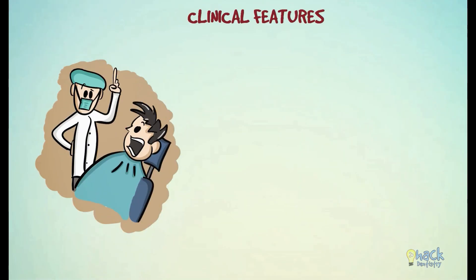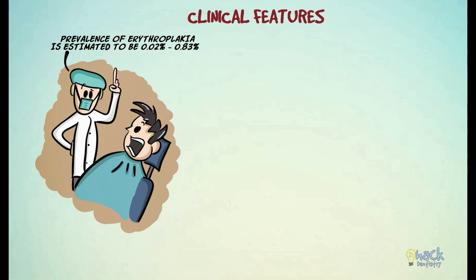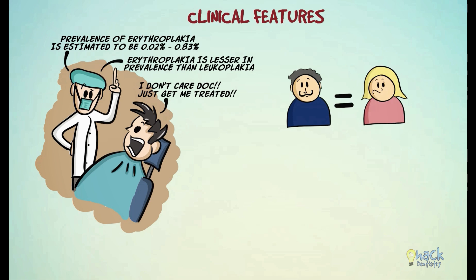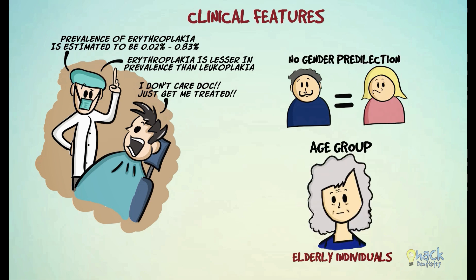Several large-scale epidemiological studies have been conducted, and the prevalence of Erythroplakia has been speculated to range from 0.02% to 0.83%. Erythroplakia is considerably lesser in prevalence than leukoplakia. There is no specific gender predilection for Erythroplakia, and the older age group is usually affected. Erythroplakia has been reported in the 6th to 7th decade in the United States, while studies conducted in India report a mean age group between 45 and 54.